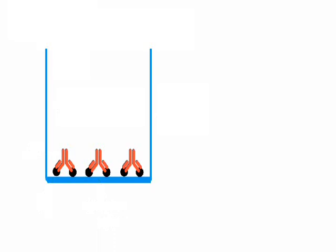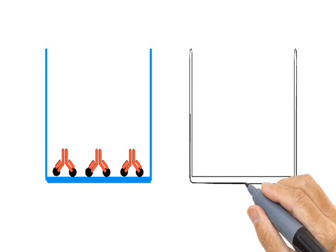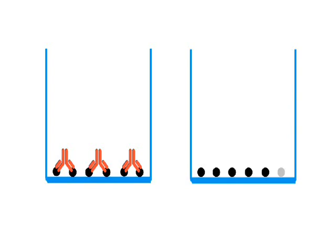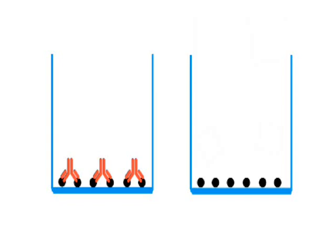But what if the sample does not contain the specific anti-A antibodies? Let us assume this situation also. A microtiter well coated with the A antigens — we add the sample but with no specific anti-A antibodies. After washing, since there are no specific antibodies, the antigens will remain free.